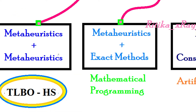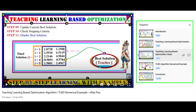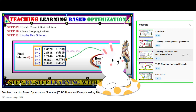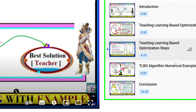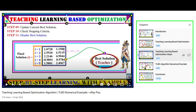In this video we will try to understand the hybridization process of two meta-heuristics: teaching learning based optimization algorithm and harmony search algorithm. Harmony search algorithm is a music-inspired meta-heuristic optimization algorithm inspired by music in real life. Teaching learning based optimization algorithm is inspired by real-life teacher-learner classroom behavior. This algorithm has two important phases: the teacher phase and the learner phase. The author combined these two algorithms together.